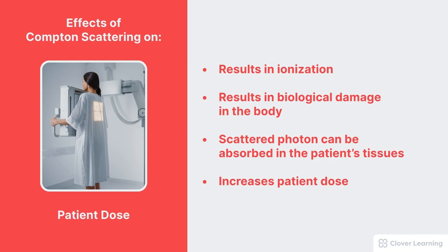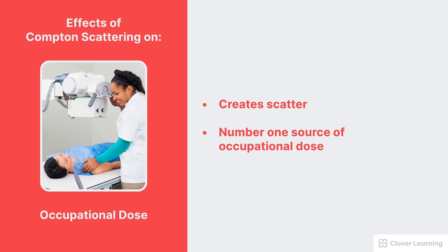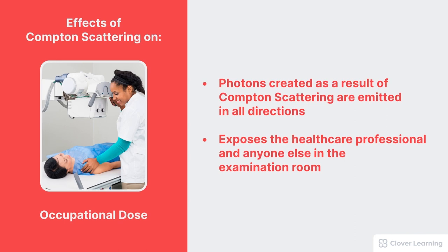Compton scattering also has a negative effect on occupational dose. The reason is that Compton scattering, according to its name, creates scatter. The scatter sometimes strikes the image receptor, but Compton scatter also strikes anyone standing in the examination room. In fact, Compton scattering is the number one source of occupational dose, because during any diagnostic imaging the patient becomes a source of scattered radiation. Since photons created as a result of the Compton interaction are emitted in all directions, they will expose the healthcare professional and anyone else in the examination room.